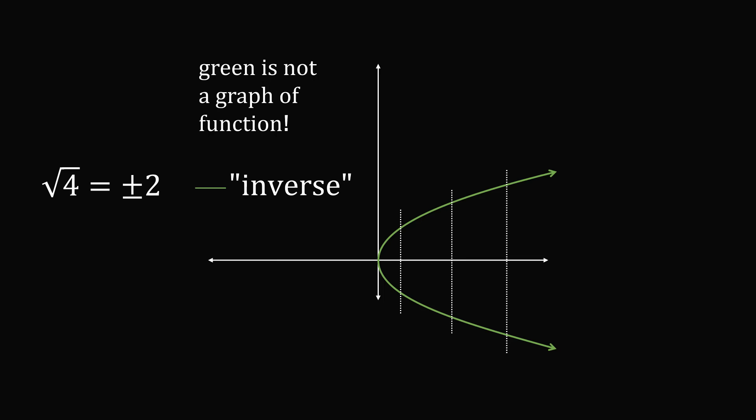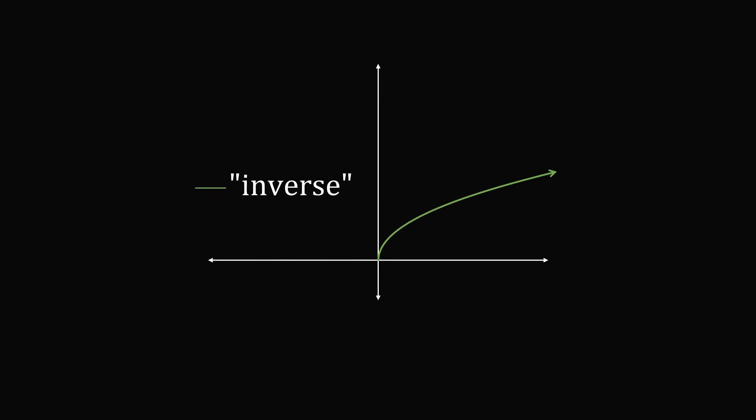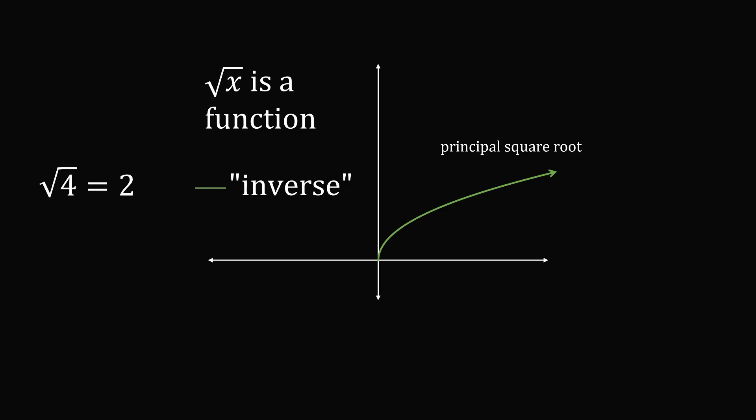It is very important that we have functions so we can use concepts like continuity and differentiation, which have many theorems. Mathematicians fix this by pruning the graph — like trimming a tree with two branches down to one. If we cut off the bottom branch, every x value corresponds to exactly one y value. This gives us the principal square root function, written as the square root of x, where there is only one y value for every x value. So the square root of 4 corresponds to just 2.